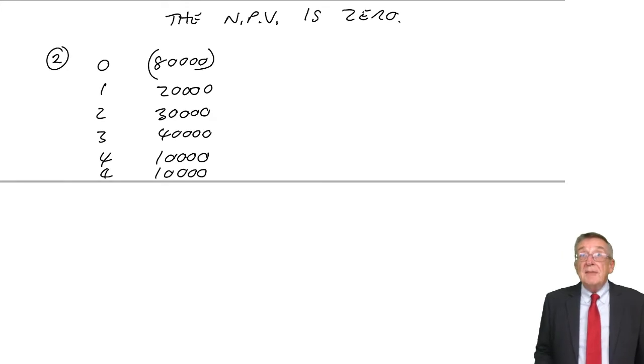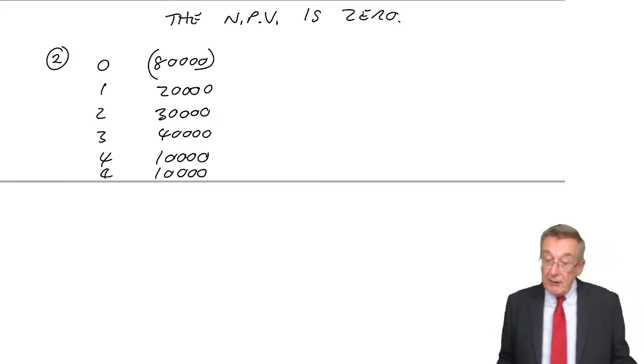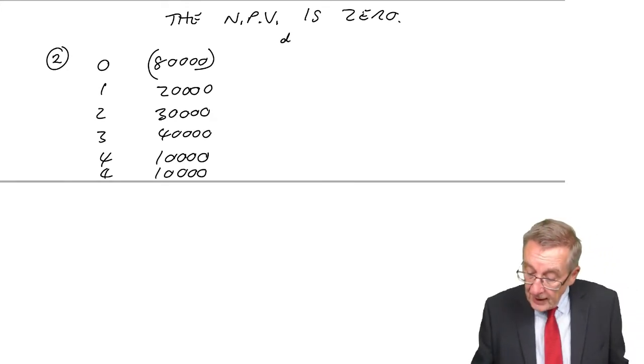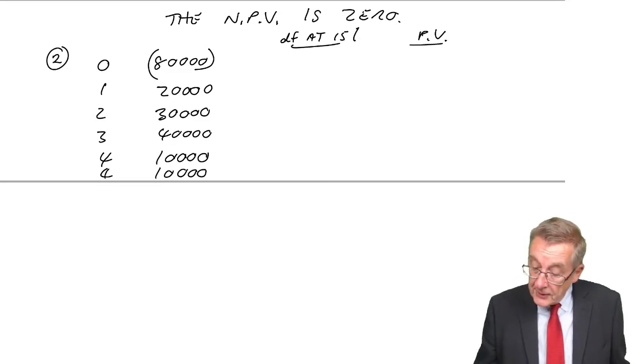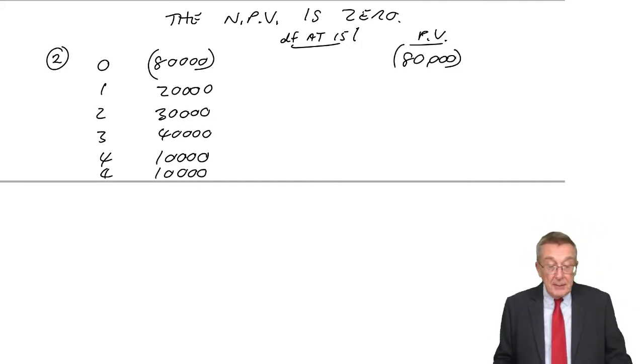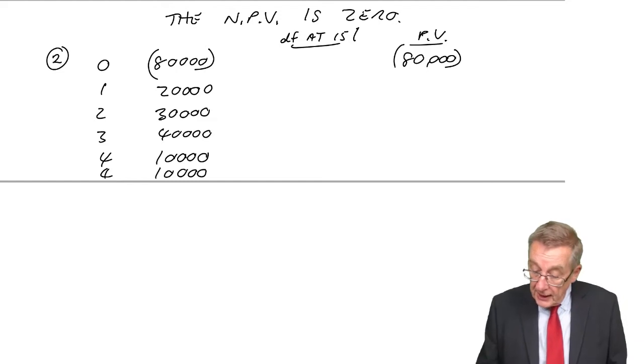Let's see what the NPV is at 15% and see if we get zero. 80,000 now is 80,000. The discount factors at 15% for one year, 0.87. Two years, 0.756. Three years, 0.658. Four years, 0.572.